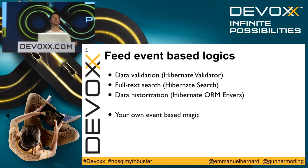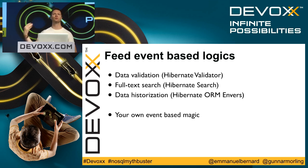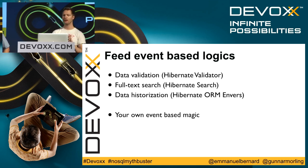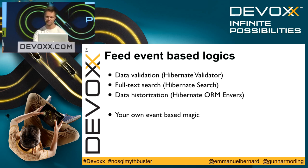We have three examples. One is data validation — every time you create or update an entity, we validate stuff, so you get that for free. We've got the Hibernate Search example, which keeps the full-text index synchronized with the data changes you're making because we listen to the events and push them. Envers is the entity versioning — keeping the history of what changed, which property by which person. Again, this is entirely based on the events that Hibernate generates. And you can create your own event magic — we can imagine new and interesting projects around that idea.